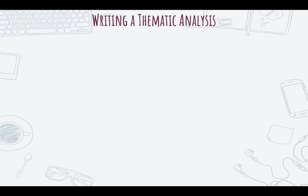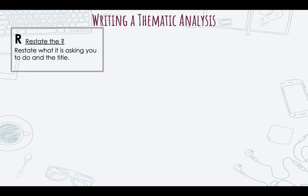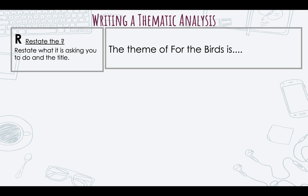Alright, so like I said, writing a thematic analysis is basically just your thematic statement and then you put it into a RACE structure. So what is the RACE structure? Well, we restate the question. So we would say, if we're talking about For the Birds, we would just say the theme of For the Birds is. If the question was what is the theme of For the Birds, you just restate the question. The theme of For the Birds is.